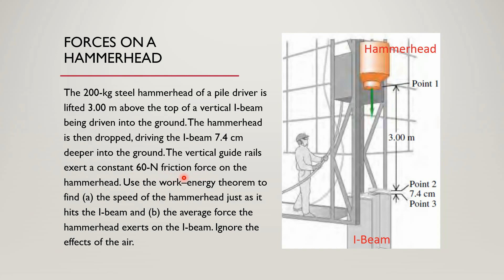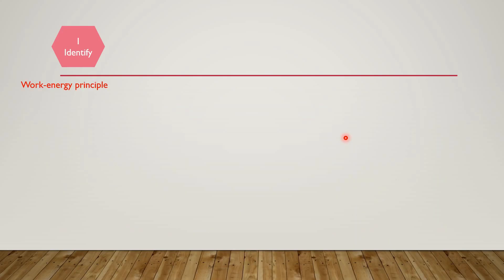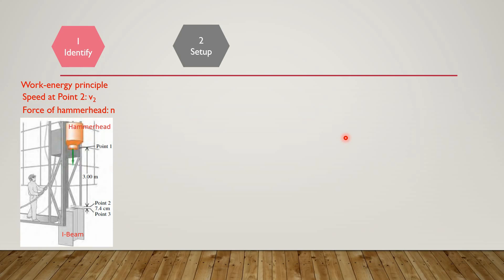We will use the work-energy theorem to calculate the velocity of the hammerhead at position 0.2 and the force exerted by the hammerhead on the I-beam. The first step is to identify the relevant concept, which is the work-energy principle. We need to find V2 and the force N. The second step is setup: we draw a simple sketch of the situation and then draw the free body diagram of the hammerhead.